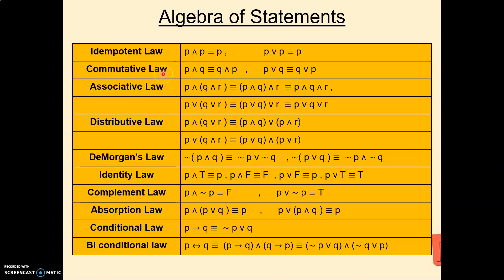The second law is the Commutative law. In this law two statements are used. So P∧Q is equivalent to Q∧P, and P∨Q is equivalent to Q∨P. This is similar to union of two sets: A∪B = B∪A.